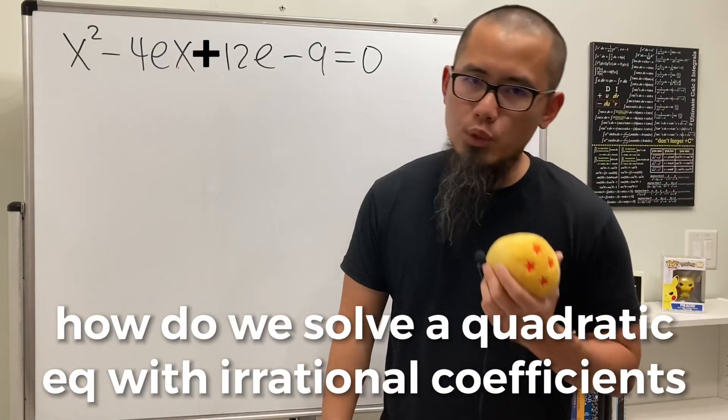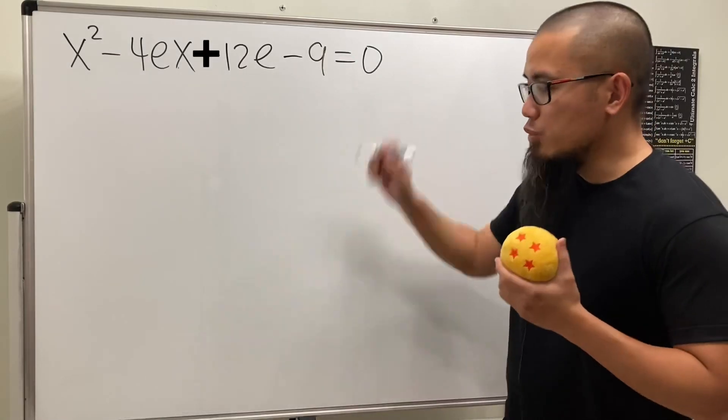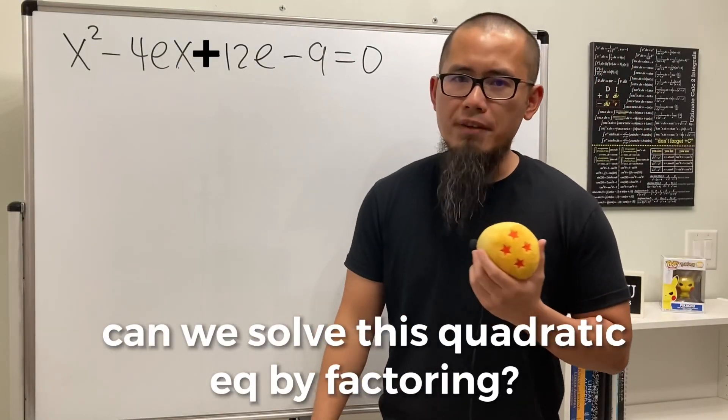How do we solve a quadratic equation with irrational coefficients? Here we have x squared minus 4ex plus 12e minus 9 equals 0. Can we solve this quadratic equation by factoring?